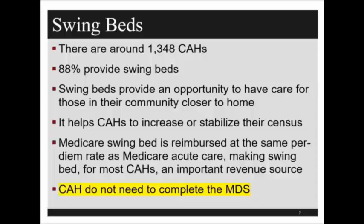Swing beds provide great financial support to critical access hospitals. They help maintain the inpatient census required to keep certification. Medicare swing beds are paid at a higher acute care rate rather than a nursing home care rate, making them a huge revenue source. The difference is that critical access hospitals entering swing beds do not have to complete the MDS — the minimum data set — which long-term care facilities are required to complete.